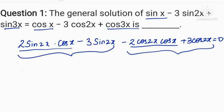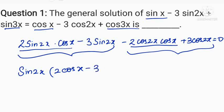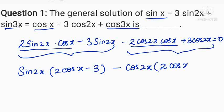When we group the first two terms, we get sin 2x as a common factor, and within the brackets we have 2 cos x minus 3. In the second group, we have cos 2x as a common factor with 2 cos x minus 3.